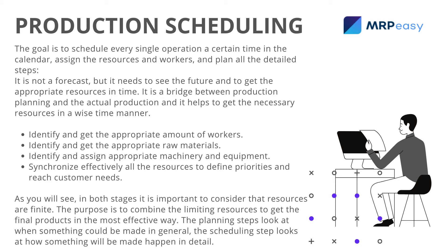In both stages, it is important to consider that resources are finite. The purpose is to combine the limiting resources to get the final products in the most effective way. The planning step looks at when something could be made in general, while the scheduling step looks at how something will be made in detail.